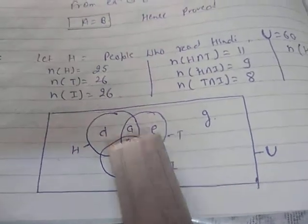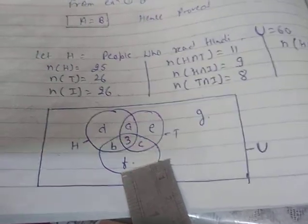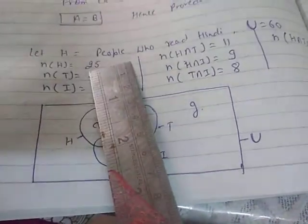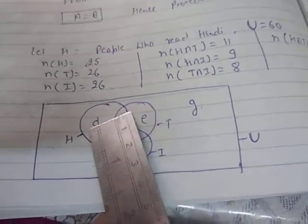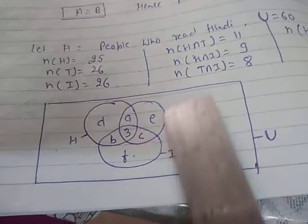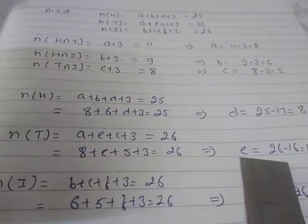First find a, b, and c from the pairwise intersections, then go for d, e, and f. The values work out to a = 8, b = 6, and c = 5. Then using the total for each set — number of H is 25, number of T is 26, number of I is 26 — you can find d, e, and f respectively.